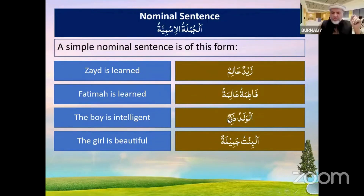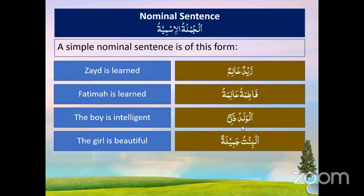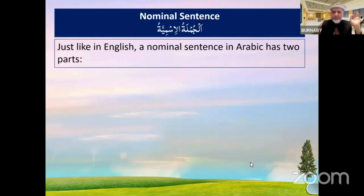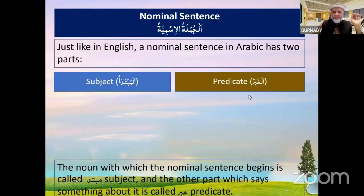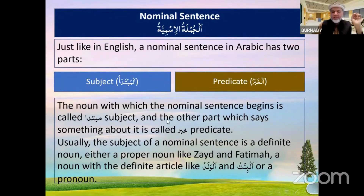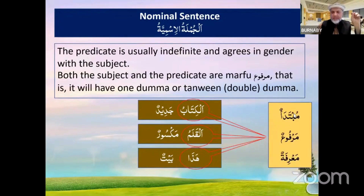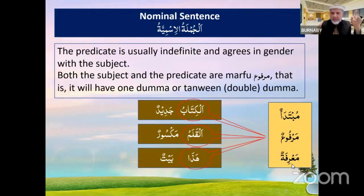The male gender follows the male gender and the female gender follows the female gender; number also matches — all singular examples here. Just like in English, a nominal sentence in Arabic has two parts: the subject known as al-mubtada and the predicate al-khabar. The noun with which the nominal sentence begins is the mubtada. Al-kitab is the mubtada, and the two important things about the mubtada are that it must be marfu and marifa.